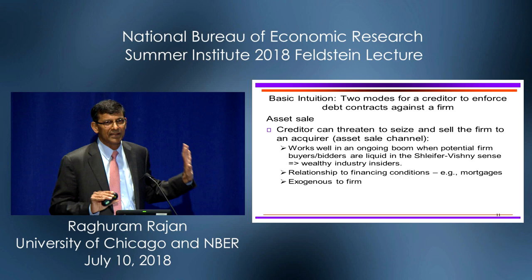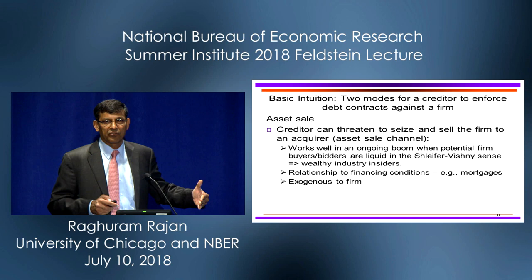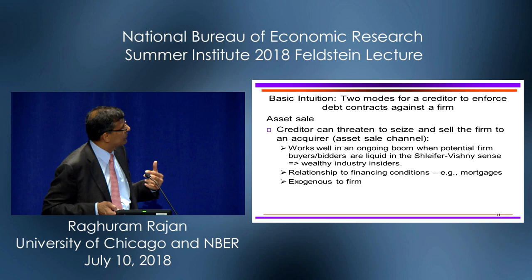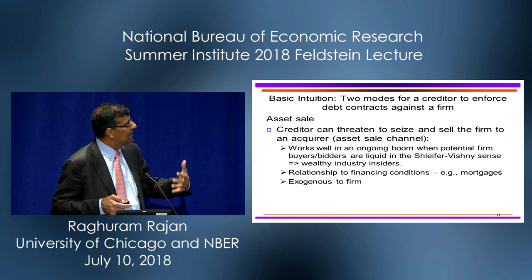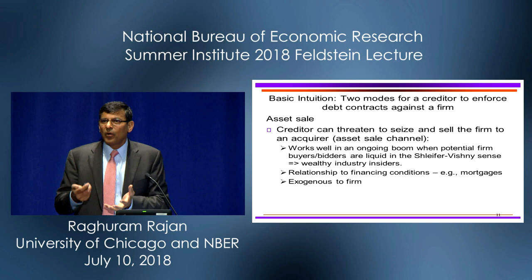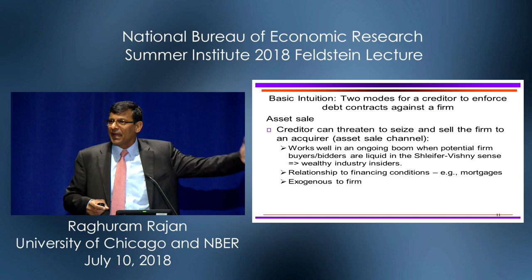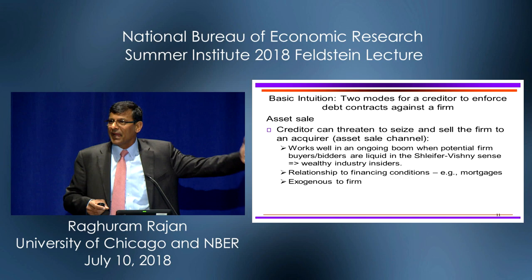I'm going to walk through three or four slides explaining the details of the model. When you think about debt contracts, what are the ways that debt contracts are enforced? Well, one way — largely popularized by Oliver Hart and John Moore — is through an asset sale. The creditor can threaten to seize and sell the firm to an acquirer. This works very well when there is a boom, when there's plentiful liquidity — meaning the capacity of bidders to pay because of their own wealth.